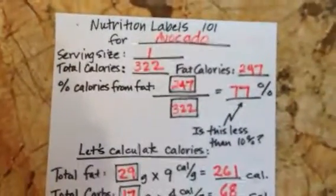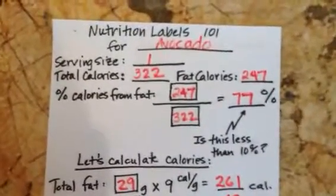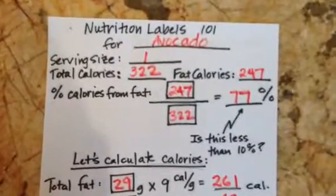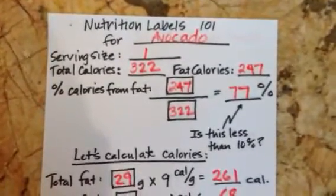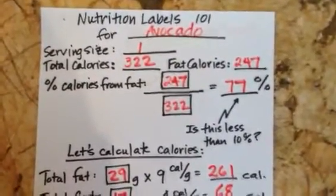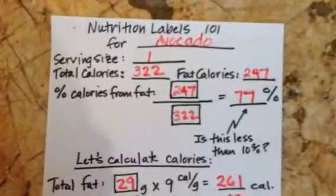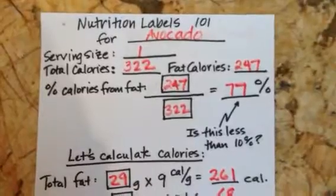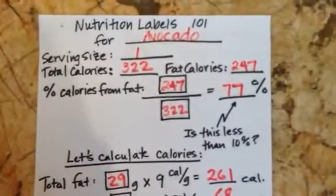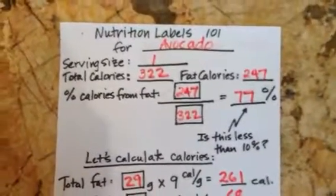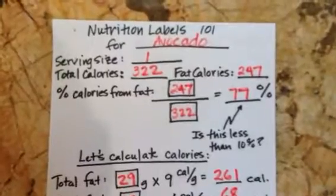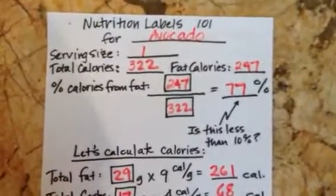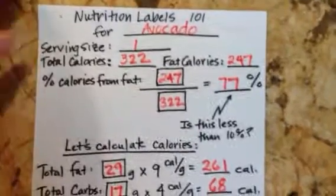We all love our avocados, but one avocado has 247 fat calories — that's 77% fat. I still buy avocados because there are a lot of healthy things about them. But instead of putting a whole avocado in my salad, maybe I'll put a third to a half, or even just a slice. We are not using avocados nearly like we used to.